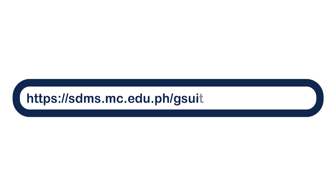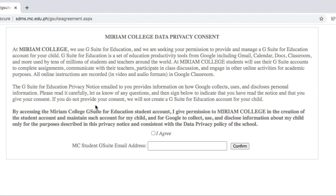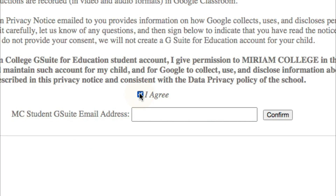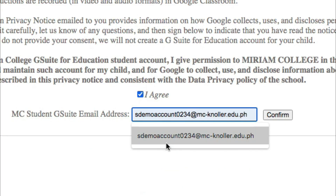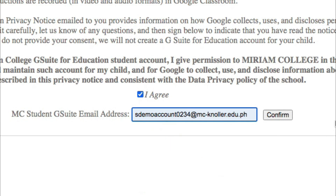Step 2: Type https://stns.mc.edu.ph/gsuiteagreement.aspx. Read the data privacy notice, click I agree, approve, and then type the student's email address. You will then be prompted to the Google sign-in after that.